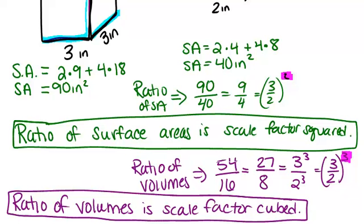So what you need to remember here is: if you know the scale factor, then the ratio between the surface areas has to be that number squared, and the ratio between the volumes has to be that number cubed. Sometimes you'll know the ratio between the volumes and have to work backwards to figure out what the scale factor would have been, or what the ratio between the surface areas would have been. But that's how it all works and how they're all related.